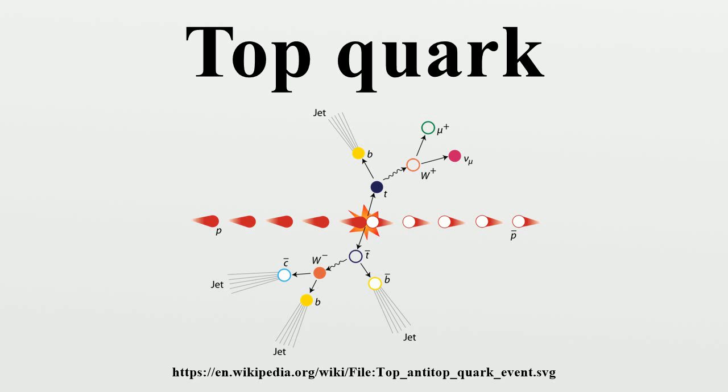The top quark interacts primarily by the strong interaction, but can only decay through the weak force. It decays to a W boson and either a bottom quark, a strange quark, or, on the rarest of occasions, a down quark.